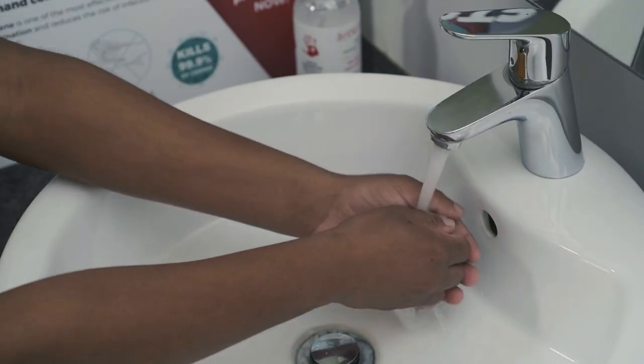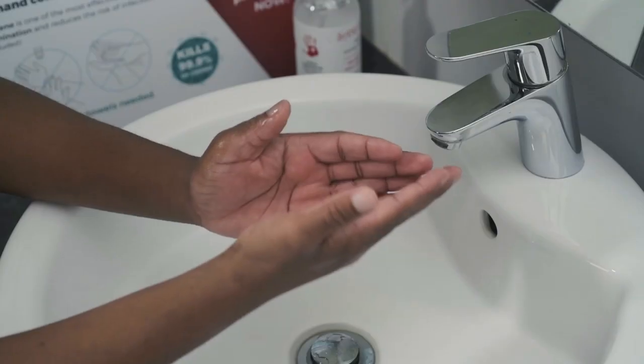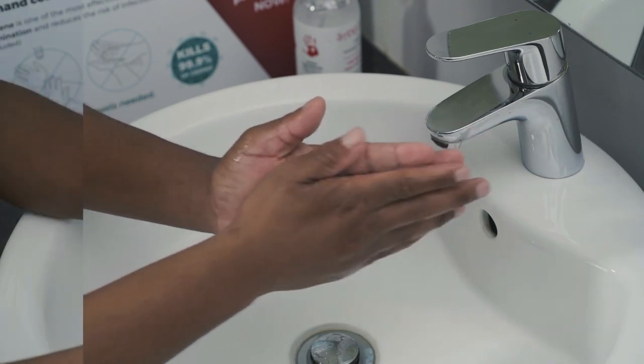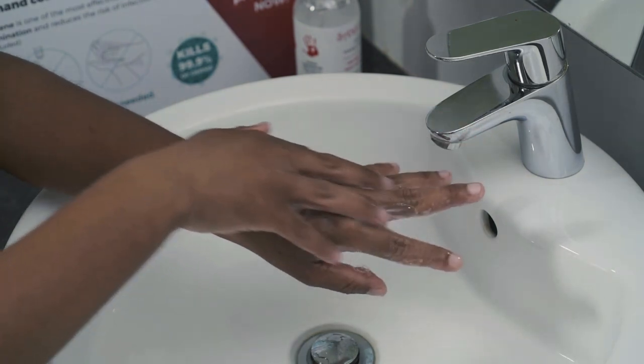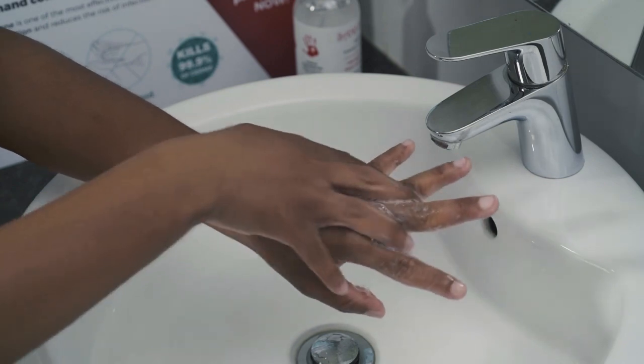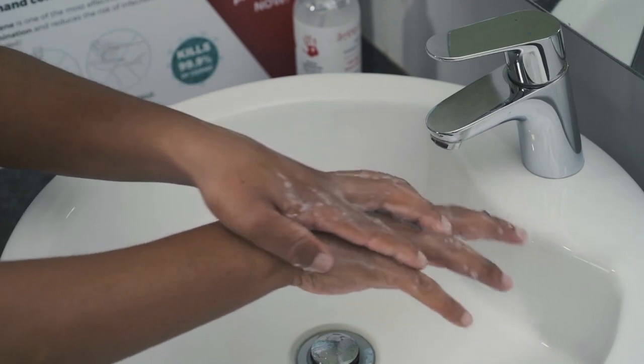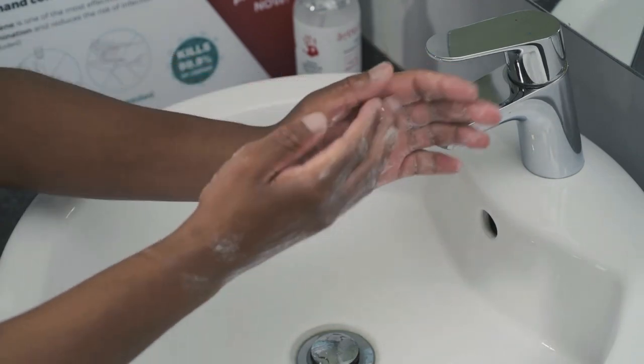To begin, wet your hands with water, cover them with soap, and rub your hands together palm to palm. Then place your right palm over your left, then your palm over your left thumb inside of your clasped right palm and switch your hands around. Next, interlace your fingers with inward facing palms and rub.